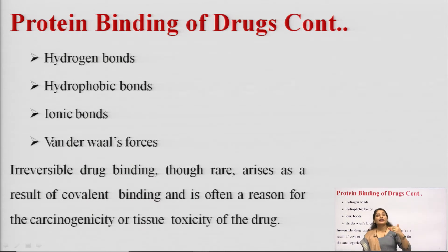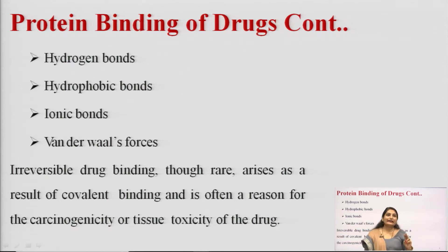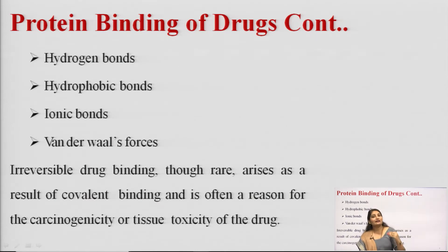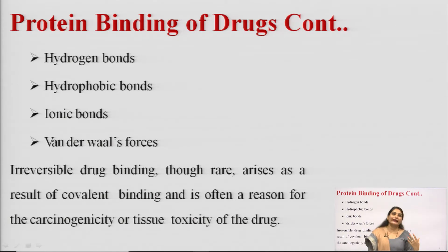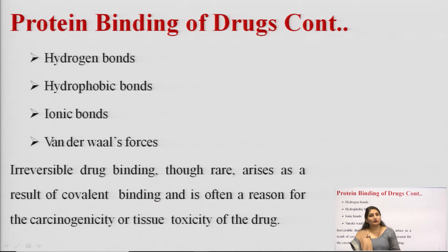Irreversible covalent binding can be a reason for carcinogenicity or tissue toxicity of the drug. To summarize: in reversible binding, weak chemical bonds are involved — hydrophobic bonds, hydrogen bonds, ionic bonds, or van der Waals forces. In irreversible binding, covalent bonds are involved, which can cause carcinogenicity or tissue toxicity.